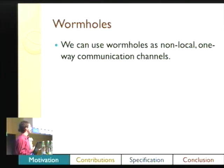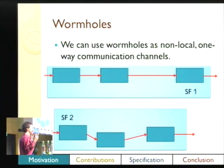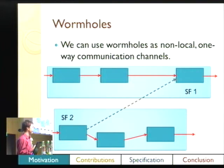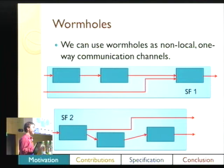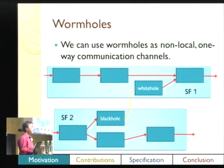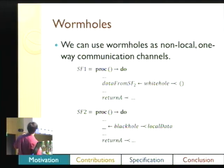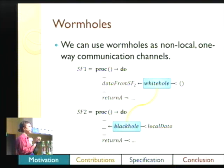Why would you want wormholes? They can be used as non-local communication channels. Say we have two signal functions built of composed signal functions internally, and we decide we want them to communicate — we want SF2 to talk to SF1. Ordinarily you'd have to do all sorts of partial applications and change the types of your signal functions, which is a pain. But wormholes with their yellow connector allow us to connect these two signal functions without messing with the types, just by sticking in a wormhole between them. In Haskell, the code would look like this: we introduce our arrow syntax, read from a white hole in one, and write from a black hole in the other. They're connected even though they're two separate signal functions and we've never connected them by types or composition.